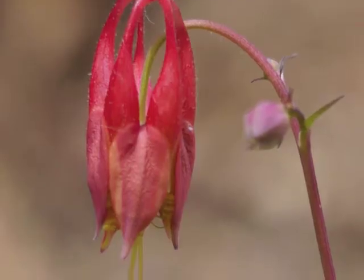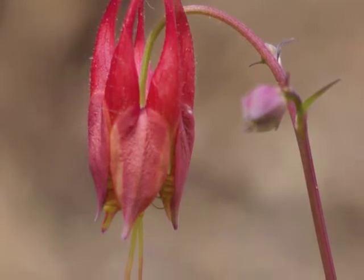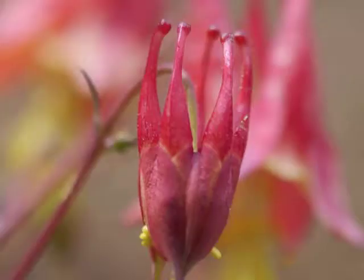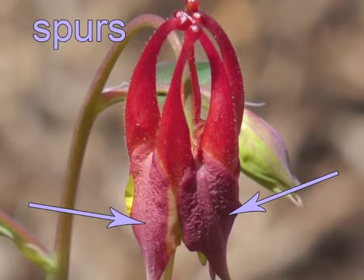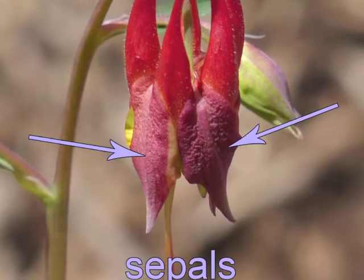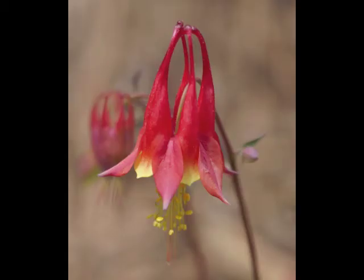The Columbine flower opens enough so we can see some of its reproductive parts peeking out. The nectar spurs turn bright red. Observe how the petal spurs grow up between the sepals.